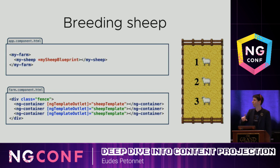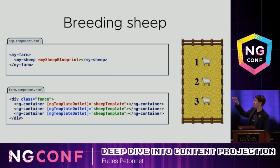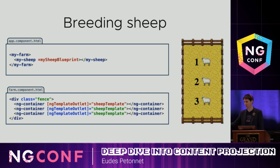The most important part is that they count correctly — one, two, three — meaning they're naturally bred, not weird clones all showing one. Each sheep is properly instantiated and will be a separate instance that behaves differently based on user actions.